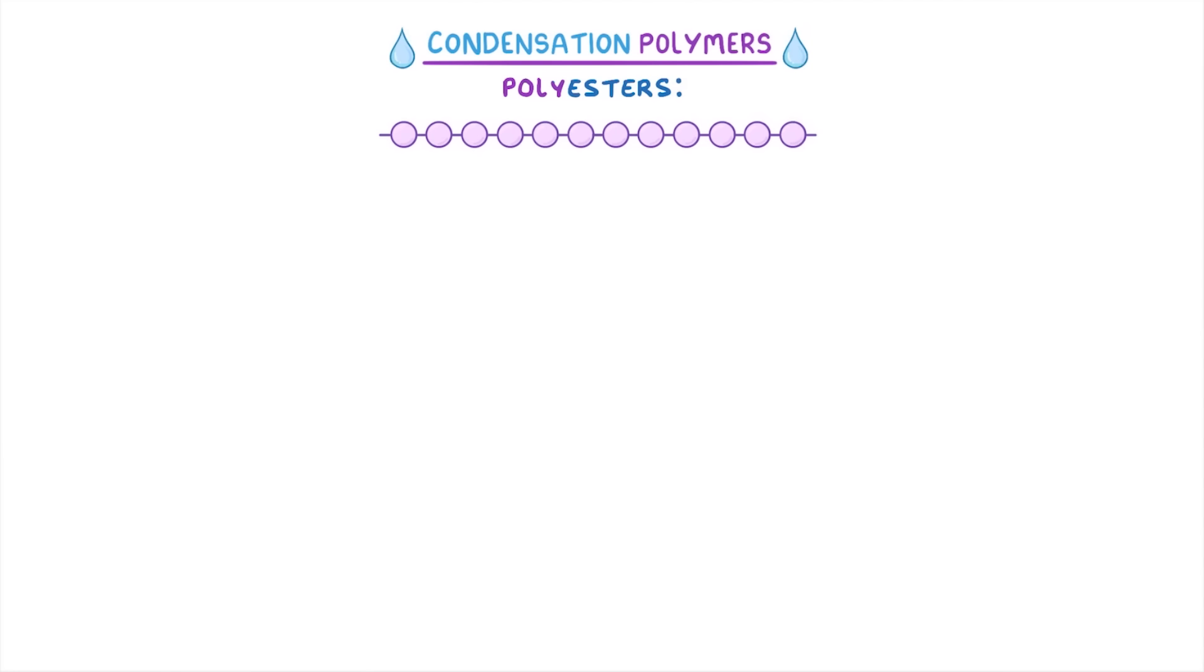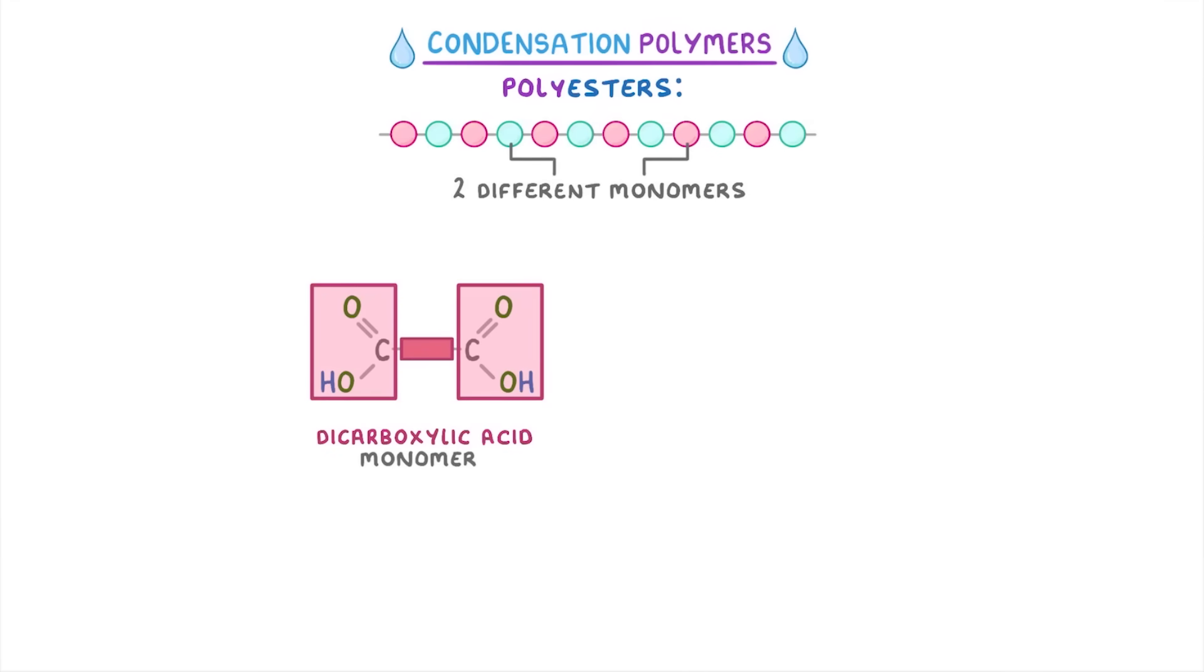Like all polymers, condensation polymers are made up of lots of individual monomers. With polyesters though, a common combination is to use two different monomers: a dicarboxylic acid monomer which contains two carboxylic acid groups, and a diol monomer which contains two alcohol groups.